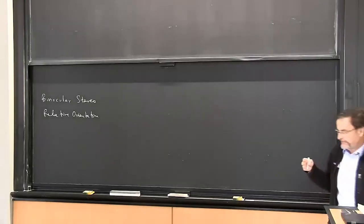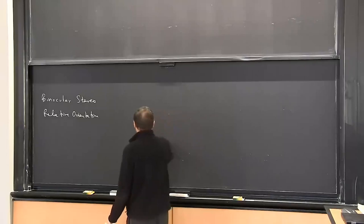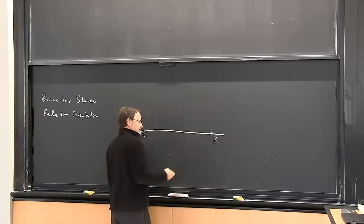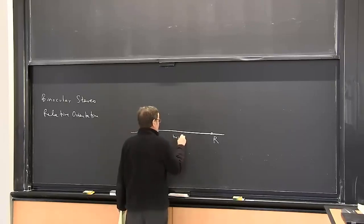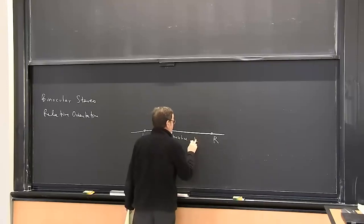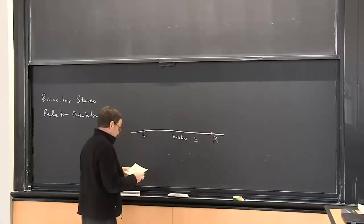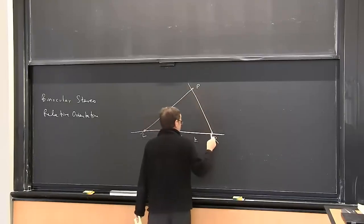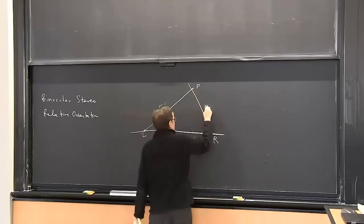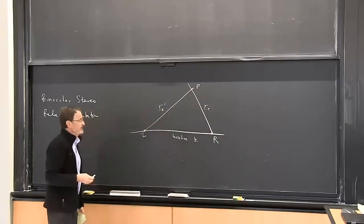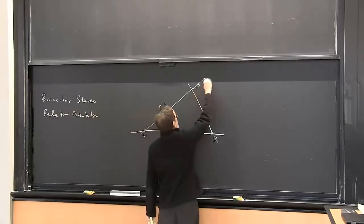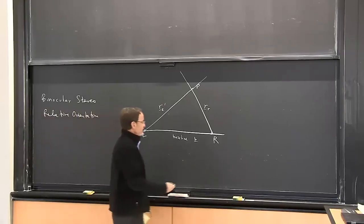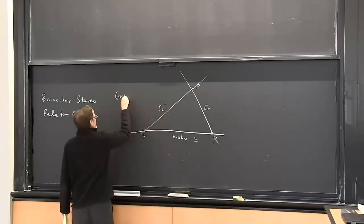Suppose we have a left center of projection and a right center of projection — those are the principal points of our cameras — and then there's a baseline. We'll have a vector B that describes that baseline. Now we're looking out at a point in the world, and we can determine where it is in the two cameras. From the individual camera images, we don't know how far along that ray it is, but if we have both, we can find the intersection. Here I'm working in the right-hand coordinate system.